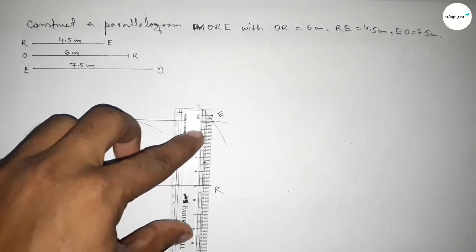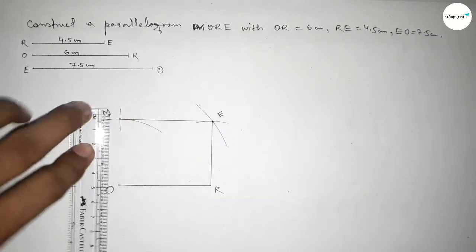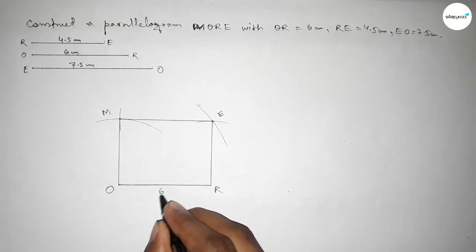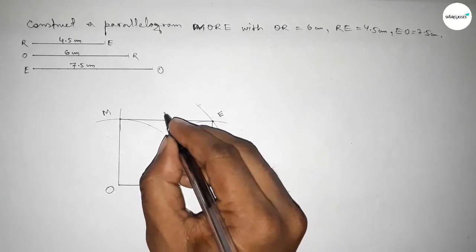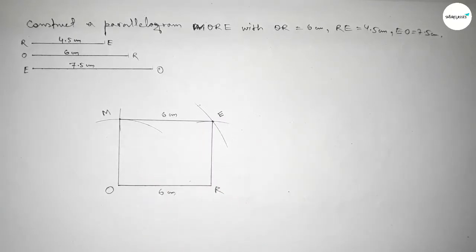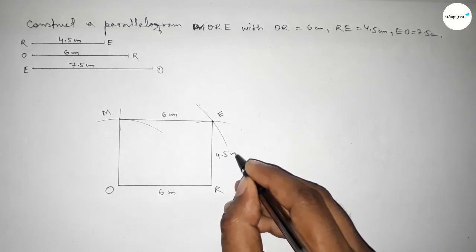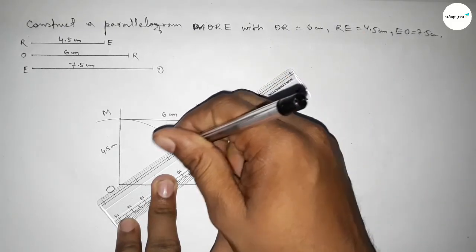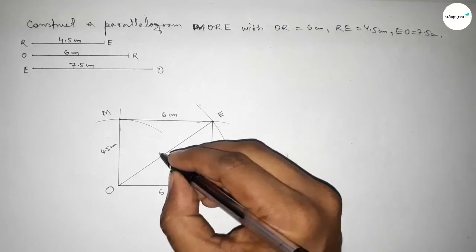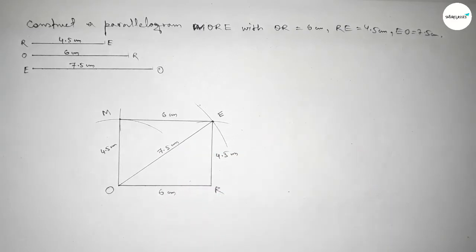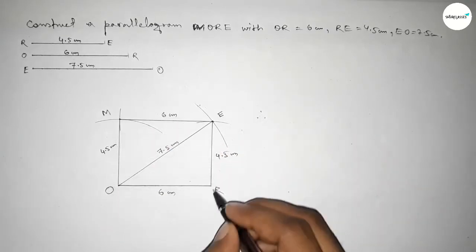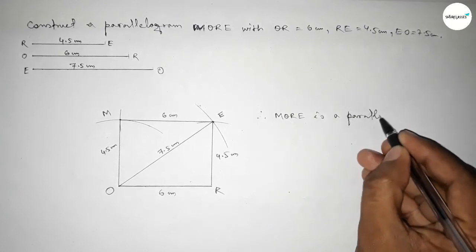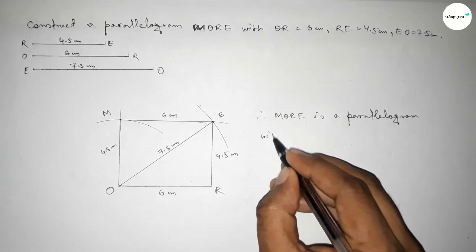Now first joining M to E, then joining this line, then joining last M to O. So this side is 6 centimeters, and this is the opposite and parallel line, also 6 centimeters. This side is 4.5 centimeters and the opposite side is also 4.5 centimeters. The diagonal EO is 7.5 centimeters. Therefore MORE is a parallelogram with the given sides.